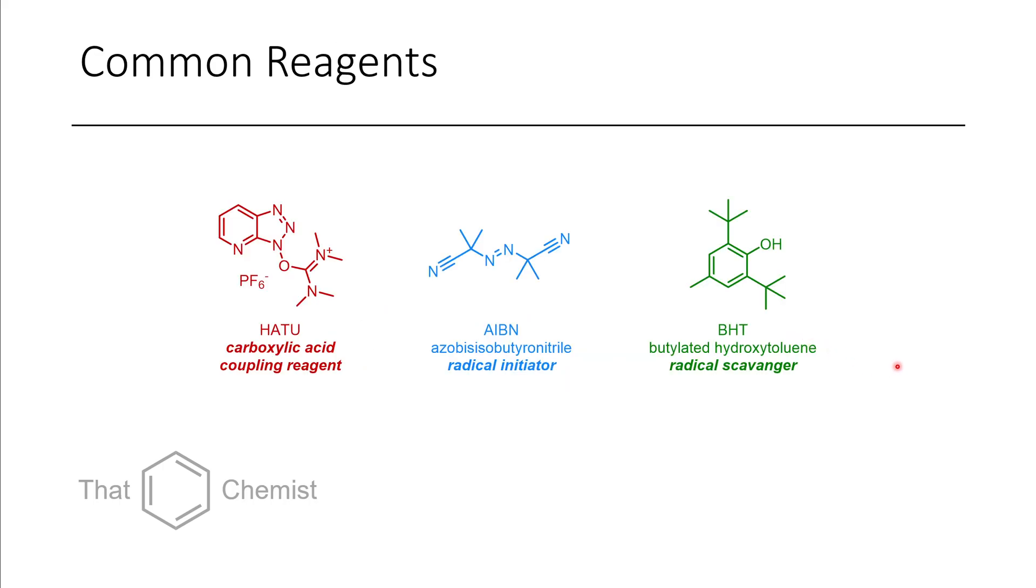Before we start today's material, let's talk about a couple additional common reagents. Here we have this reagent called HATU. It's similar to another one called PIBOP. These reagents are frequently used for the synthesis of esters from carboxylic acids and alcohols, as well as in the synthesis of amides from amines and carboxylic acids. It's most commonly used for the synthesis of peptides.